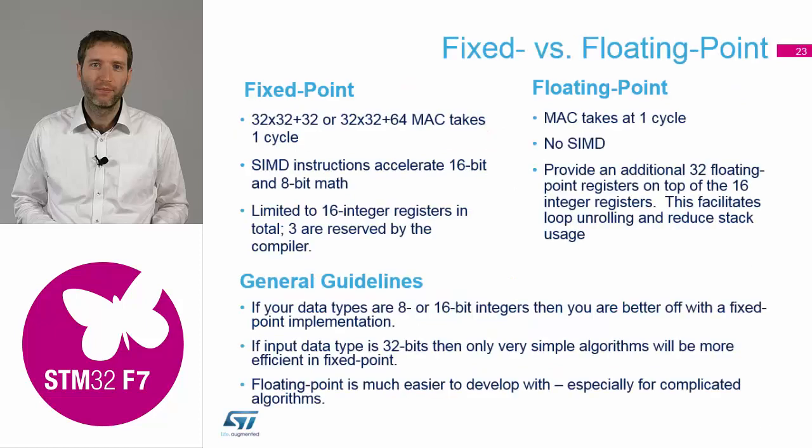Moving from fixed point to floating point — what kind of acceleration do we have? First of all, there is no SIMD instruction, so one operation is only able to take one or two operands in float. You cannot do double the operations at the same time. On the other side, the MAC — multiplication and accumulation — takes one cycle, which is only true for the M7.